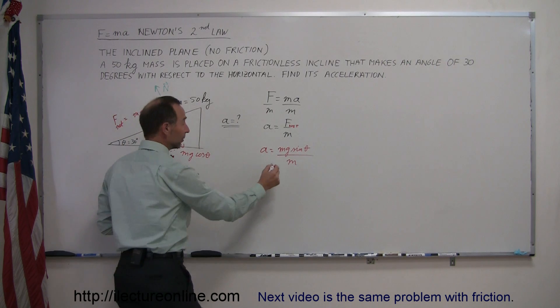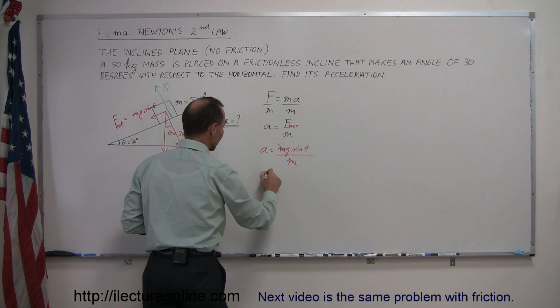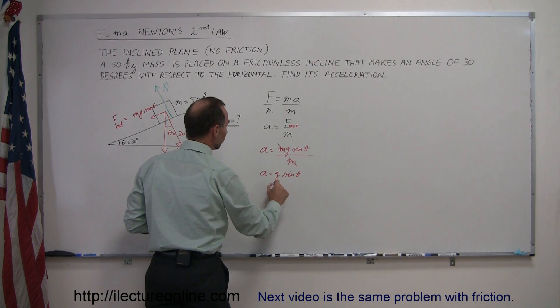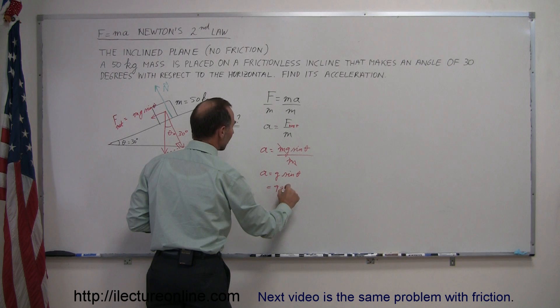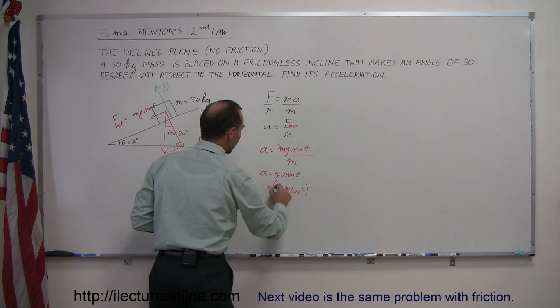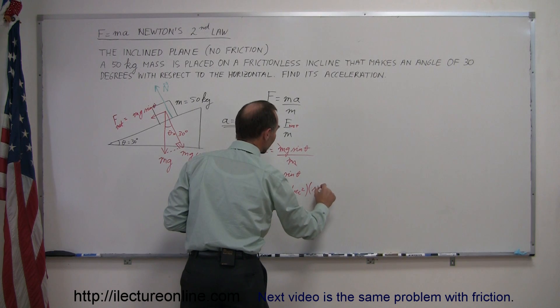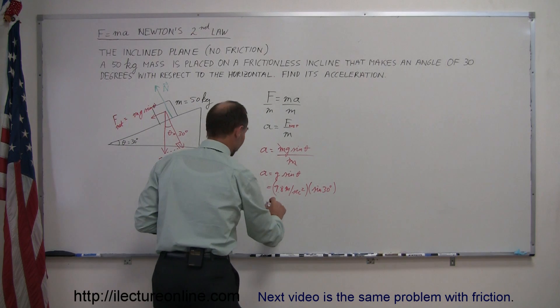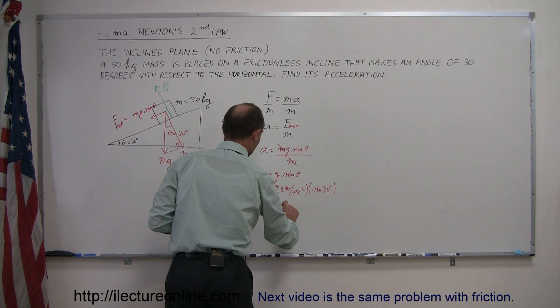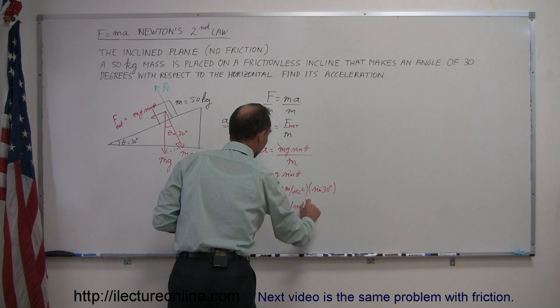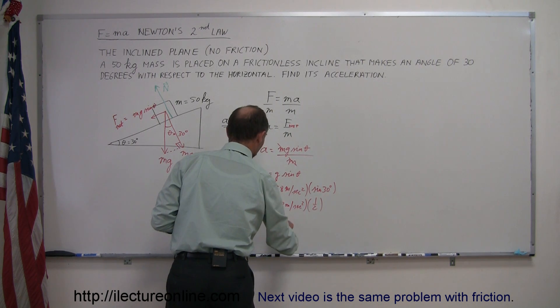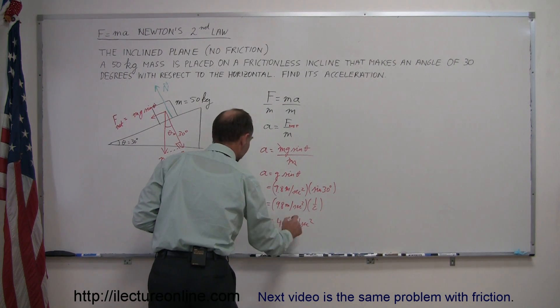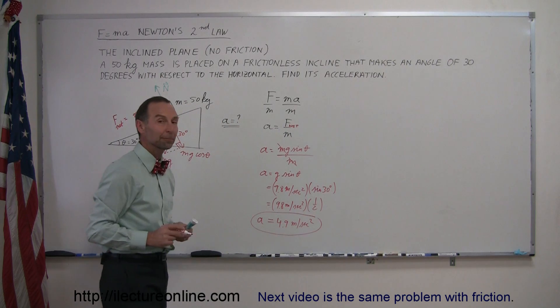Notice that the masses cancel out, and we can see that then a is equal to g, which is acceleration due to gravity, times the sine of the angle theta. So g is 9.8 meters per second squared, and the sine of theta is now the sine of 30 degrees. The sine of 30 degrees, that's one-half, so this is equal to 9.8 meters per second squared times one-half, and so this is equal to 4.9 meters per second squared. And that is the acceleration of the mass on that inclined plane.